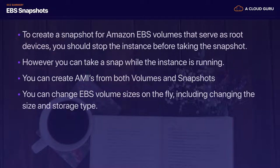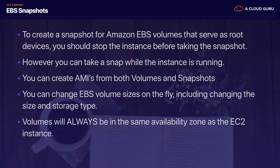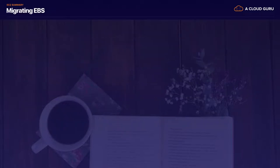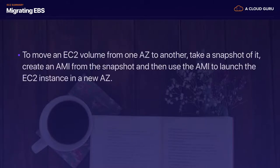You can change EBS volume sizes on the fly, including changing the size and storage type. Volumes will always be in the same availability zone as the EC2 instance — you cannot have an EC2 instance in one availability zone and an EBS volume in another.